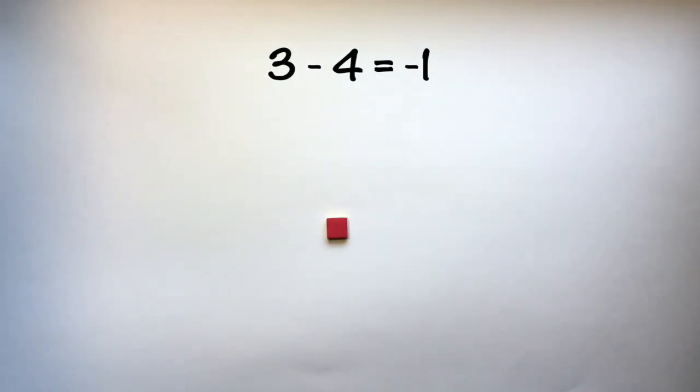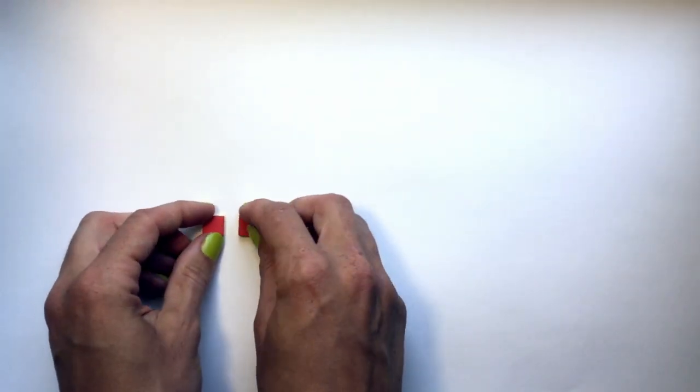Let's look at another example. Let's do negative 2 minus positive 3. If I wanted to subtract positive 3 from here, I don't have anything.